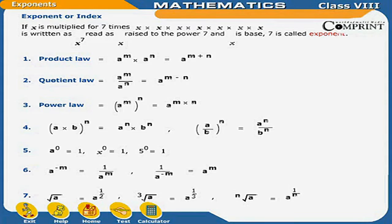Rule 5: A to the power 0 is equal to 1. For example, X to the power 0 is equal to 1, and 5 to the power 0 is equal to 1.